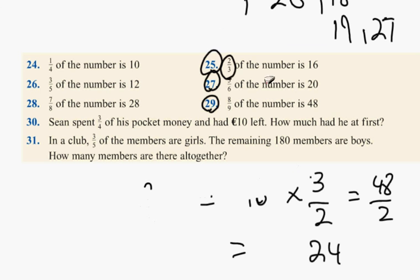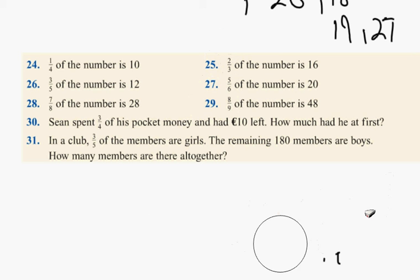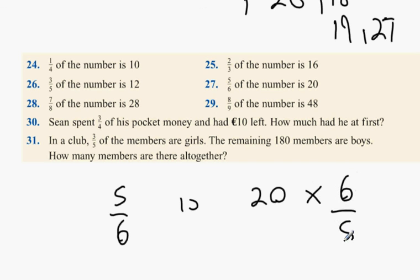Next one, 27. Now, for 27, it's 5 sixths of a number is 20. 5 sixths of the number is 20. But what we have to remember about this number is it's bigger than 20. So, we're going to turn it upside down. We're going to multiply by 6 and divide by 5. Or, divide by 5, multiply by 6. It's going to be 120 divided by 5, which is 24.